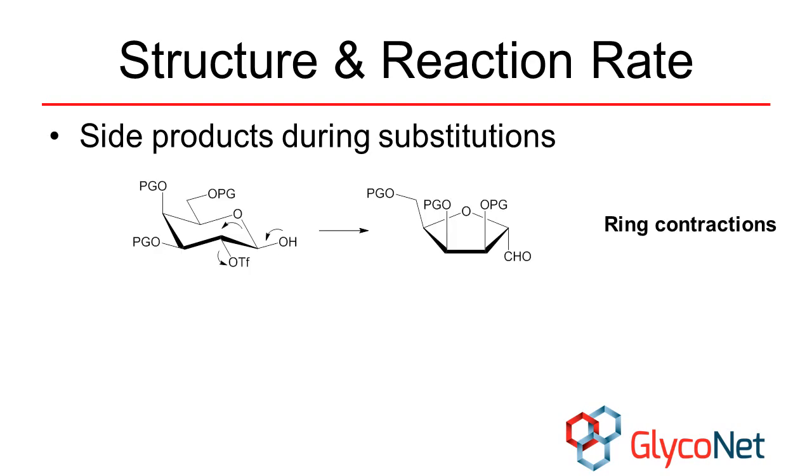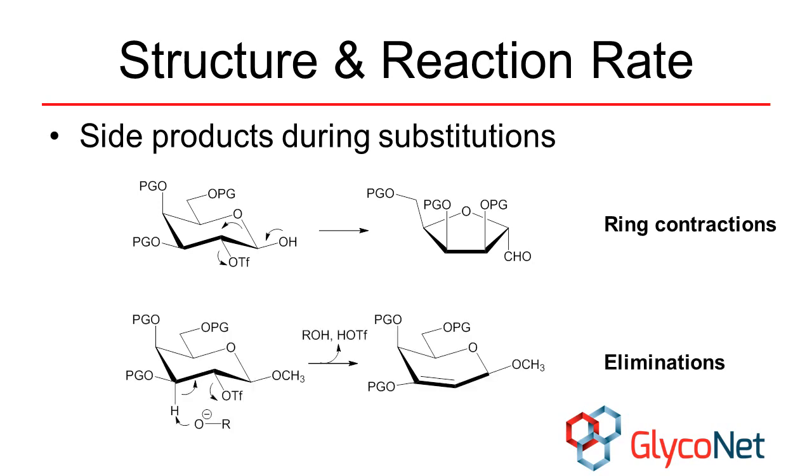First, ring contractions may occur if a good leaving group oriented equatorially at C2 is present. The ring oxygen will displace the group at C2 to generate a five-membered ring.